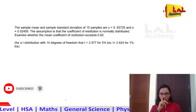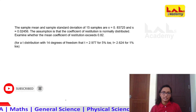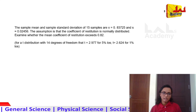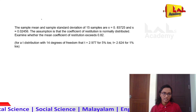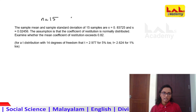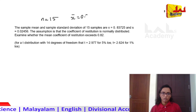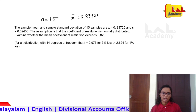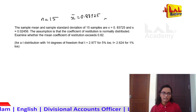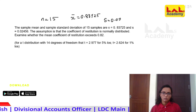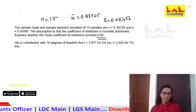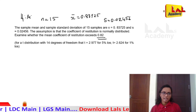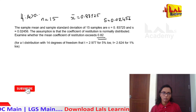This is a similar question about sample standard deviation. We need to find the probability for a sample mean using 15 samples. The sample mean is 0.83725 and the standard deviation is 0.02456, testing whether this exceeds 0.82.